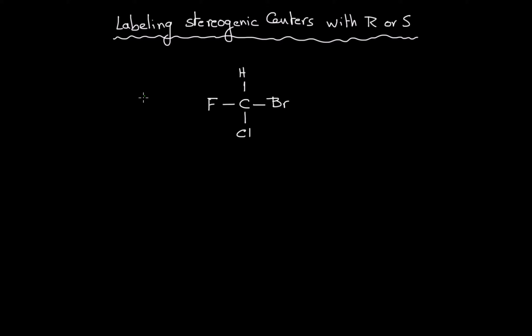In order of decreasing atomic number, the atom of highest atomic number gets the highest priority. Therefore, in this example, Br is the atom with the highest atomic number, so it gets priority number one. Then Cl gets priority number two, fluorine gets priority number three.